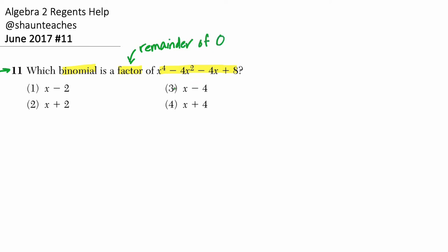And you can do that. You can divide them one by one, but it takes a little bit of time. What you might do instead is use the remainder theorem. The remainder theorem says that if you have a binomial that looks like this, x minus c,